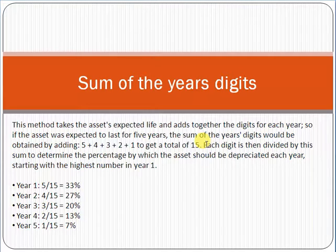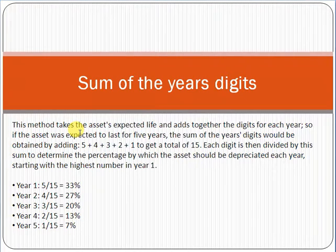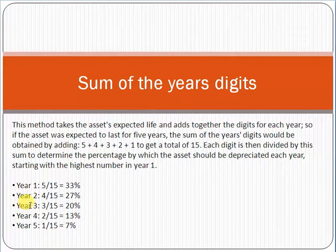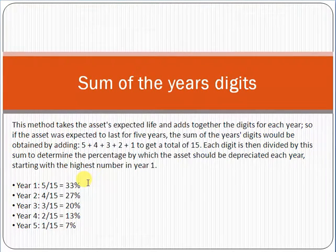Starting from the highest value for year one: Year 1 = 5/15 = 33%; Year 2 = 4/15 = 27%; Year 3 = 3/15 = 20%; Year 4 = 2/15 = 13%; Year 5 = 1/15 = 7%. These percentages represent the rate of depreciation applied each year under the sum of the years digits method.